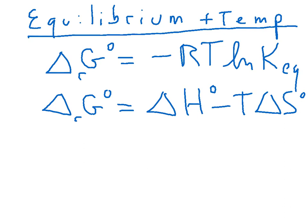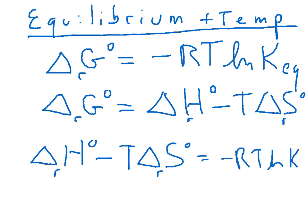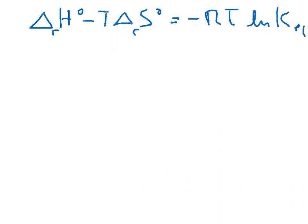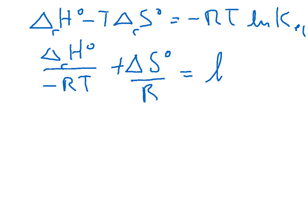And then we can equate these two, say delta H minus T delta S, that's of course for a chemical reaction, is equal to negative RT log of K. So we can divide by negative RT.